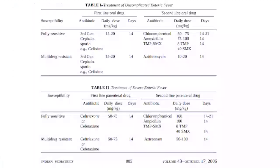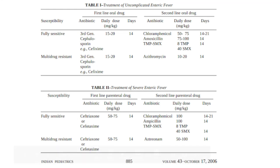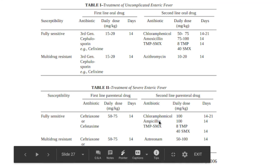The treatment protocol for uncomplicated enteric fever uses third-generation cephalosporins like cefixime or cefpodoxime at 15 to 20 mg/kg/day for 14 days. For MDR typhoid, the second-line drug is azithromycin. For fully sensitive organisms, any first-line drug can be given. For severe enteric fever requiring hospitalization, injectable third-generation cephalosporins — ceftriaxone, cefotaxime, or cefoperazone — are used. In MDR cases, aztreonam is used as the second-line drug.